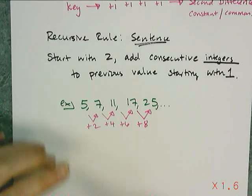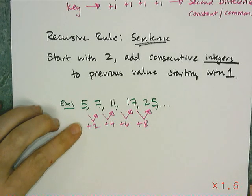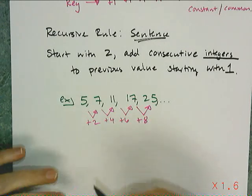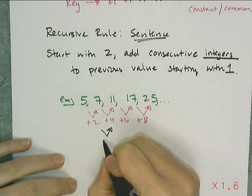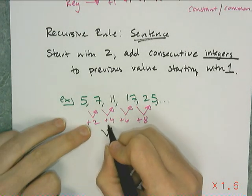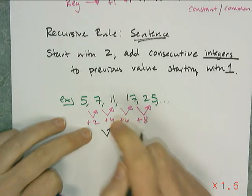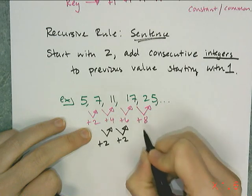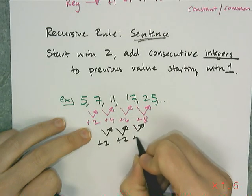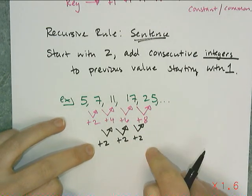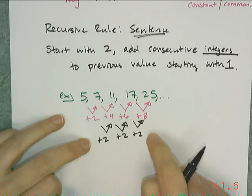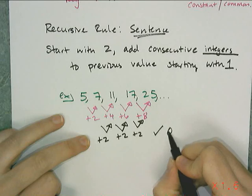So this first difference is not constant, but there's a pattern in it, which is a big clue that this could be one of those quadratic things. And so to check, I see the difference in the first difference, or the second difference. 2 to 4 is a plus 2, 4 to 6 is a plus 2, 6 to 8 is a plus 2, and check it out. I got a common or constant second difference. So I know this is quadratic.